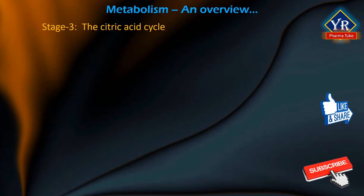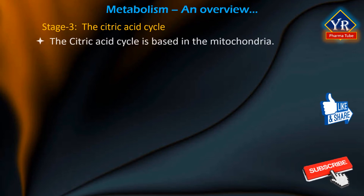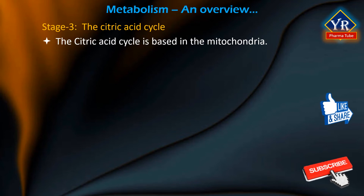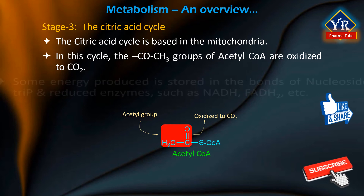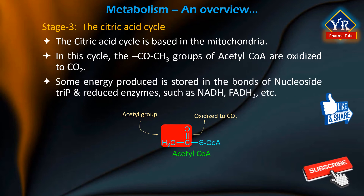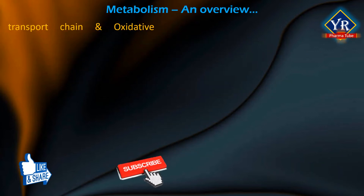Stage 3: The citric acid cycle. The citric acid cycle is based in the mitochondria. In this biochemical cycle, the acetyl groups of acetyl-CoA are oxidized to carbon dioxide. Some energy produced by this process is stored in the bonds of a nucleoside triphosphate and reduced coenzymes such as NADH, FADH2, etc.